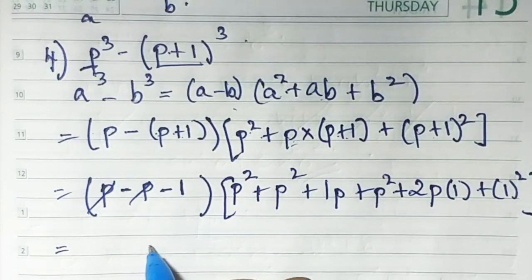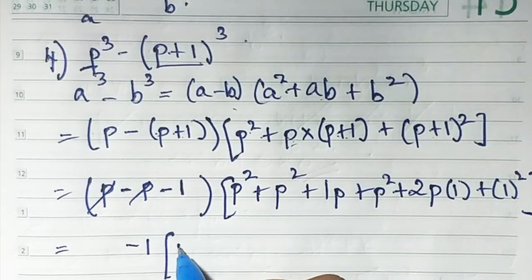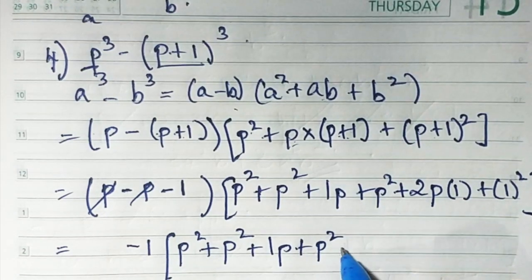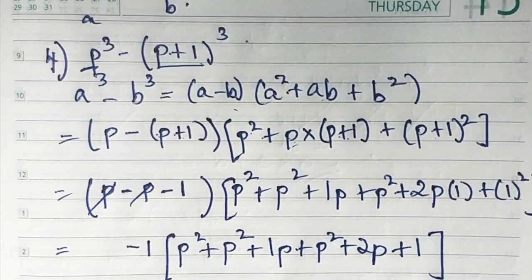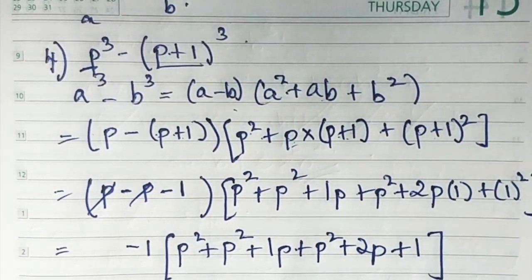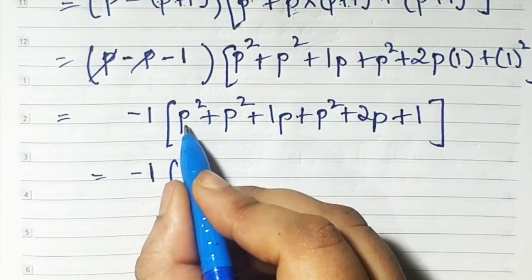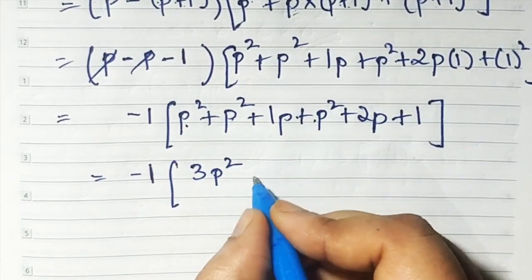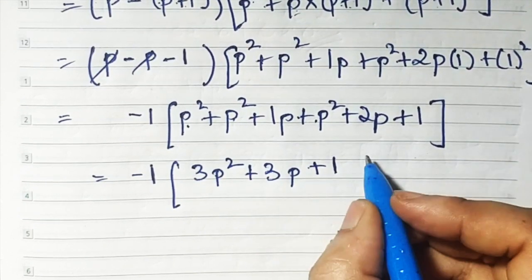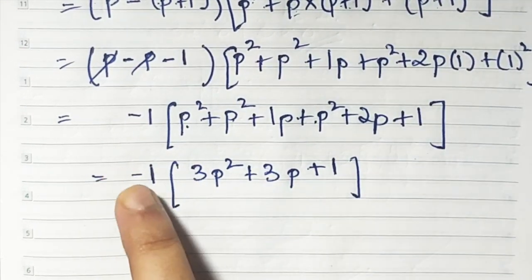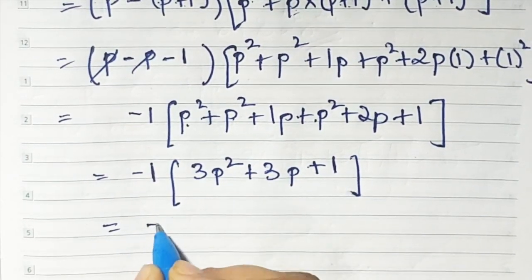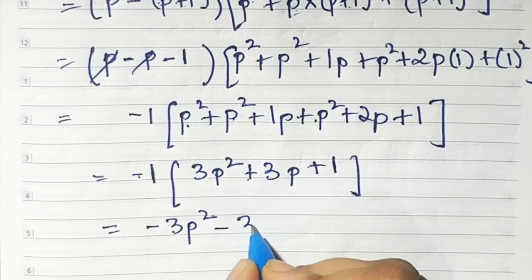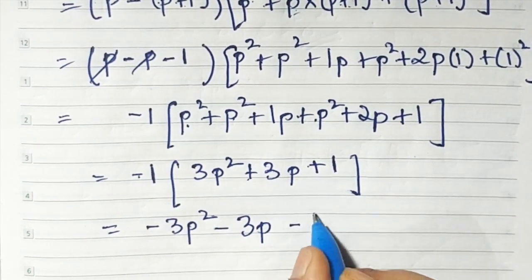What remains is minus 1. Inside the bracket: p square plus p square plus p plus p square plus 2p plus 1. All are positive so nothing cancels. We get 3p square and 1p plus 2p is 3p, plus 1. Now minus 1 multiplied with the whole bracket: minus 1 times 3p square is minus 3p square, minus 1 times 3p is minus 3p, minus 1 times 1 is minus 1. So the answer is −3p² − 3p − 1.